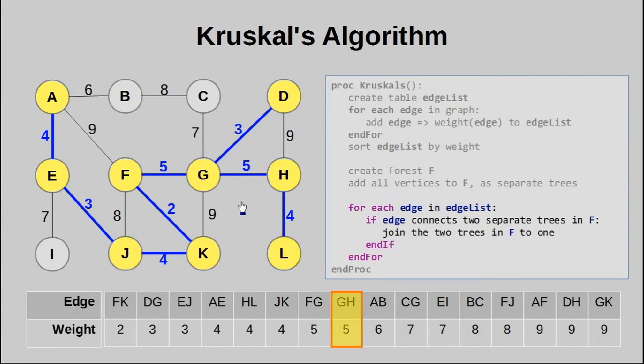Then we get GH, which now connects this tree to the rest. We now have one large tree that spans almost all the vertices in this graph.